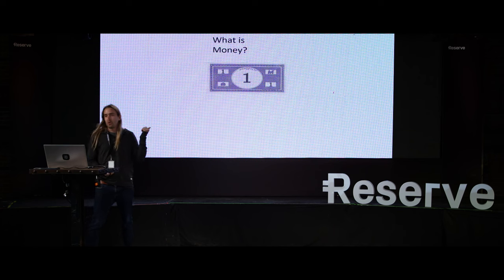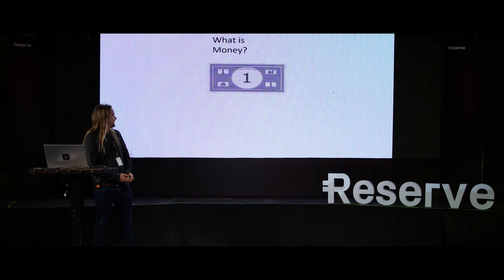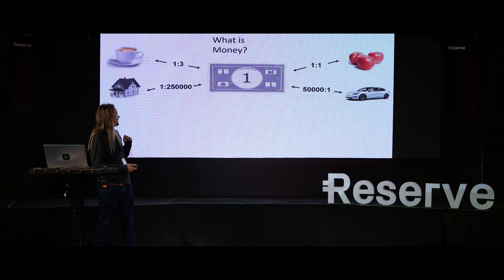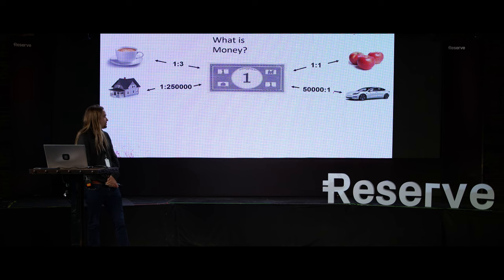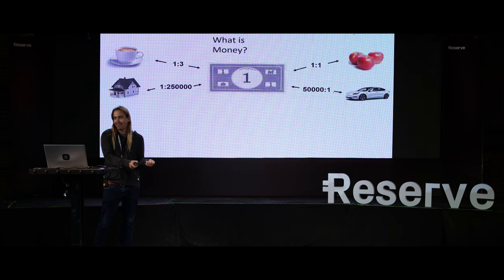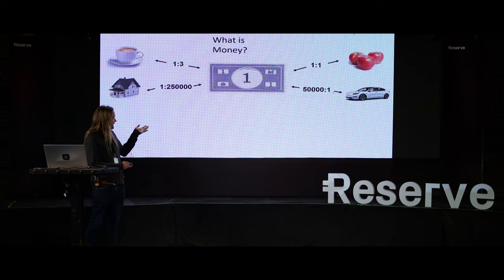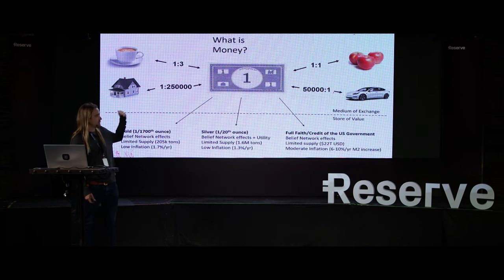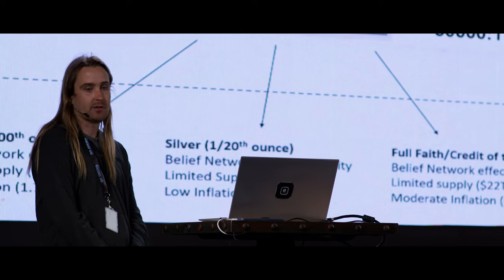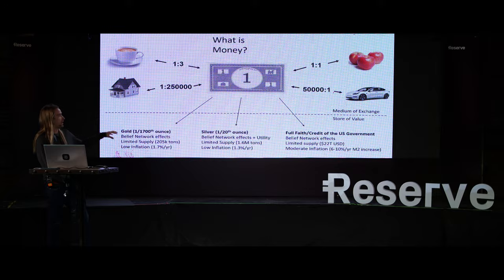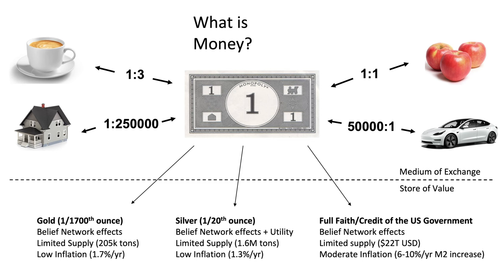Before we get into that, I want to start with the question of what is money. We have this dollar bill — Monopoly money that we can convert to real-world things. We can take three of these and convert it for a coffee, take one and buy a pound of apples, 50,000 of them and buy an electric car, or 250,000 and buy a house. But if I were to go to Tesla with 50,000 Monopoly dollars, they're probably not going to comply. So money needs to be backed up by something redeemable for value — something we can use as a medium of exchange. Over the last 5,000 years of human history, we've traditionally used gold or silver as the backstop for money.